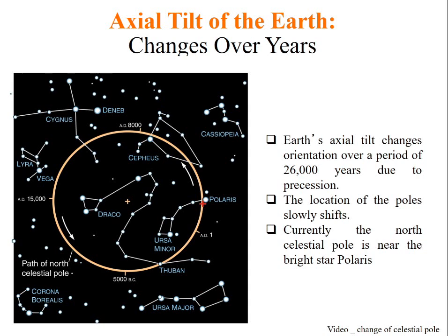The location of the poles slowly shifts. Currently, the North Celestial Pole is pointing towards a bright star called Polaris. But over 26,000 years, it will counterclockwise rotate and come back to Polaris.